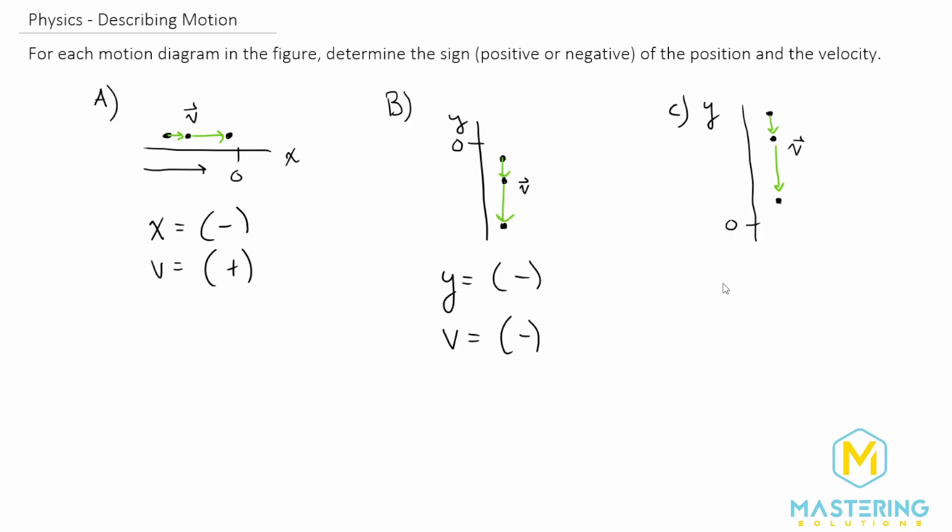Lastly for part c, we'll have the position as y. These ones are all above the zero, so they're all on the positive side of the y-axis, so all of these will have a positive position.